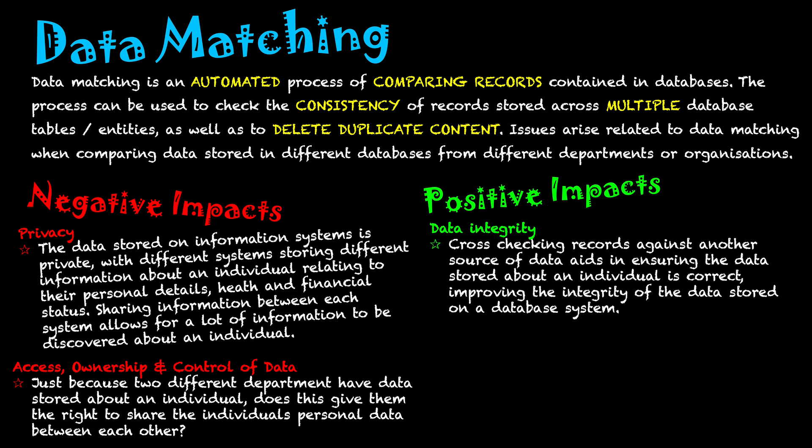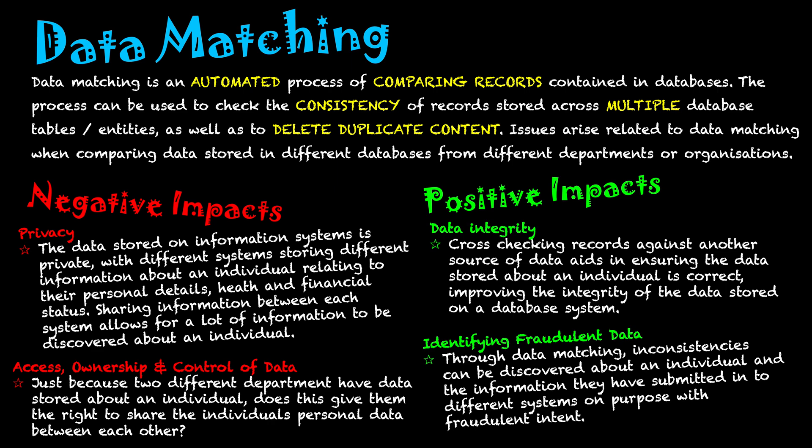Another positive is identifying fraudulent data. Some people may intentionally provide incorrect data to a system for fraudulent reasons — for example, providing false information to a government database to claim welfare they're not entitled to. If that database is matched against another, it becomes possible to identify that the person is doing the wrong thing.